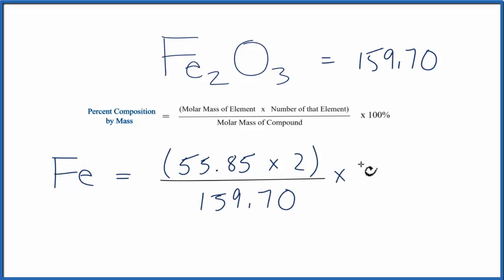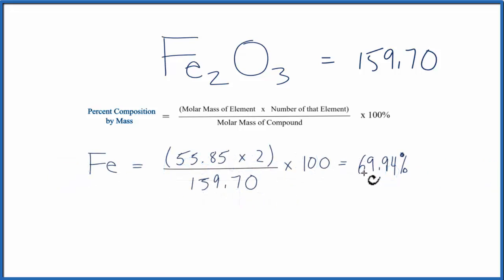We're going to multiply that by 100. So when we do this, we multiply 2 times 55.85, we get that number, divide by 159.70, multiply by 100, and we end up with a molar mass of 69.94%. So that's the percentage of iron in this Fe2O3.